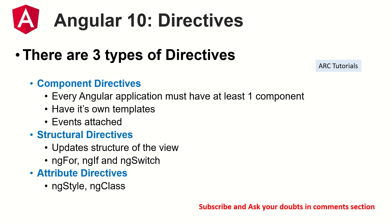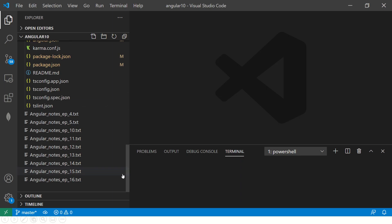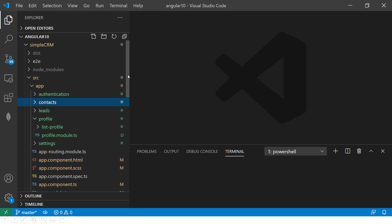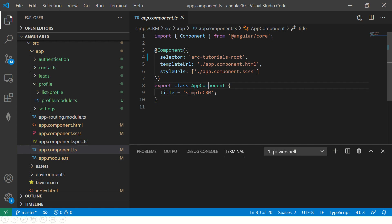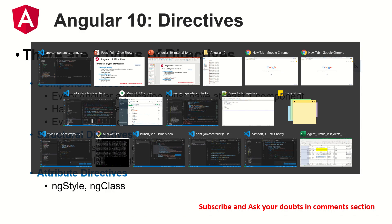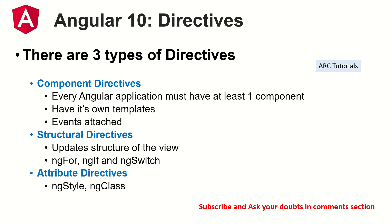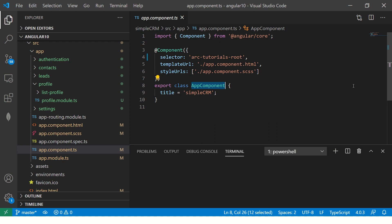Component directives we have seen in previous episodes — we have generated components and we know that every Angular application comes with at least one component, which is app component. So at the beginning of this episode, I mentioned you cannot have an application without any directive — that one directive is the component directive, called app component. Component directives are called so because they have their own templates. You can also attach events to component directives, which is what we call event binding.